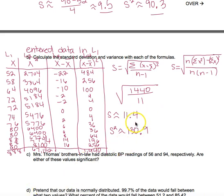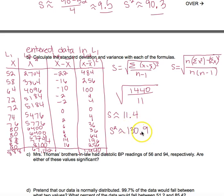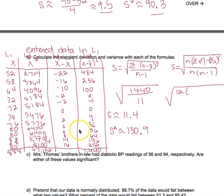If you forget to use the unrounded value, you won't have an accurate answer for s². If you just do 11.4 squared instead of all those decimal places, you get 129.96, which rounds to 130.0 — not accurate. Always square the standard deviation itself, not the rounded version.